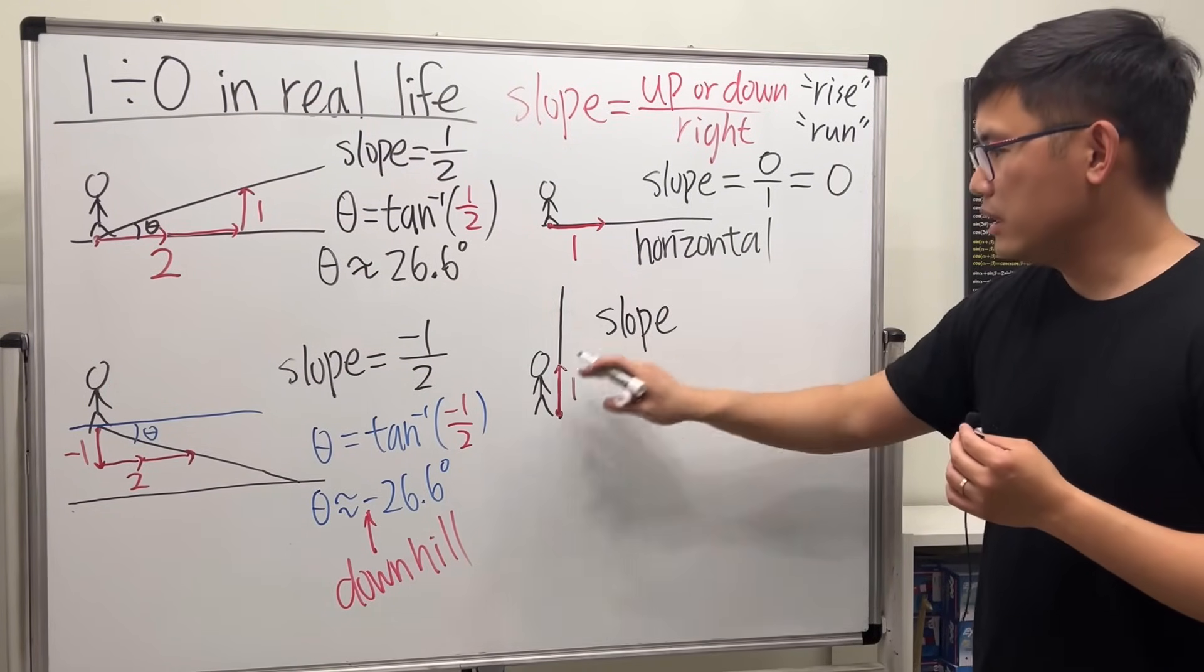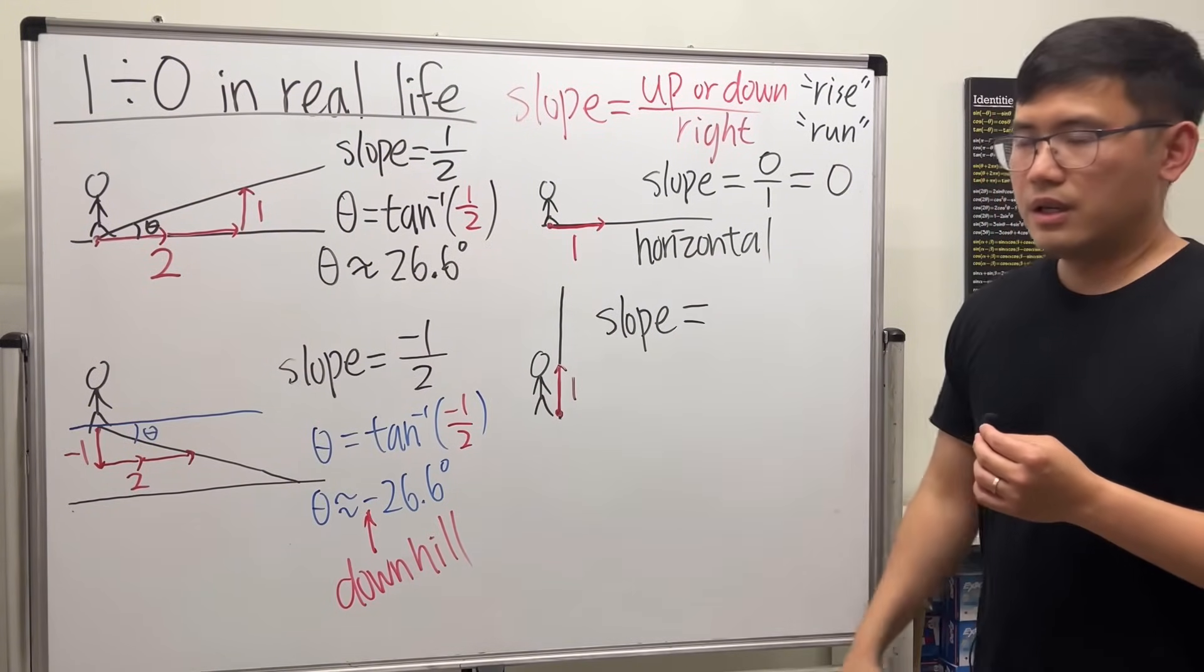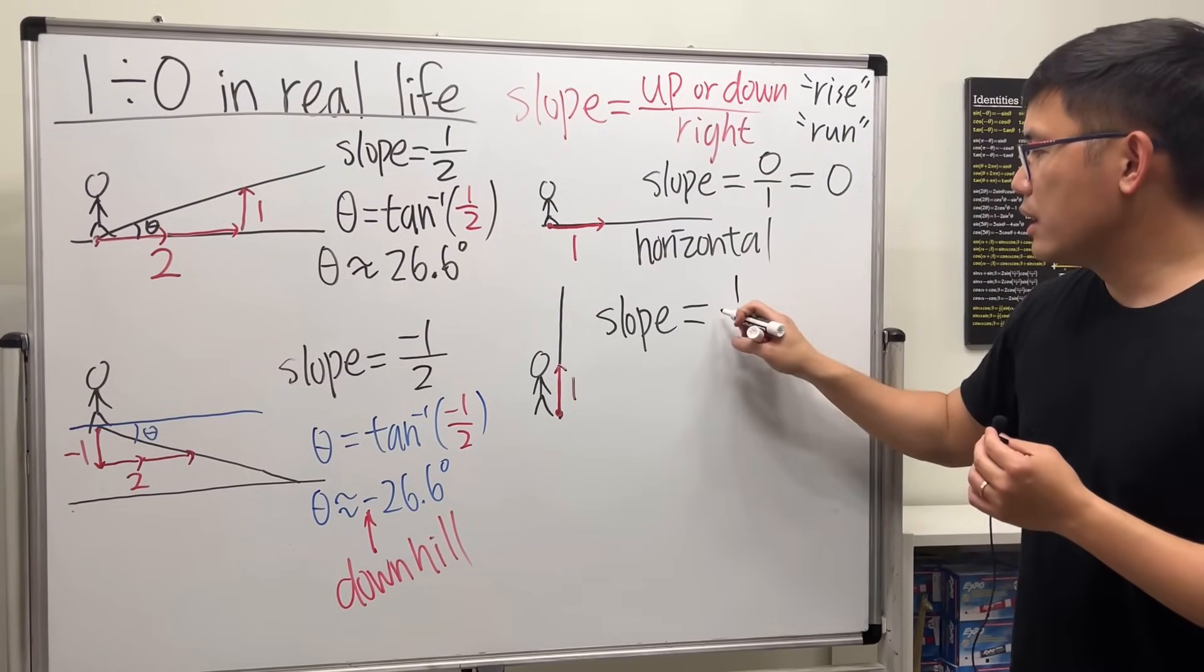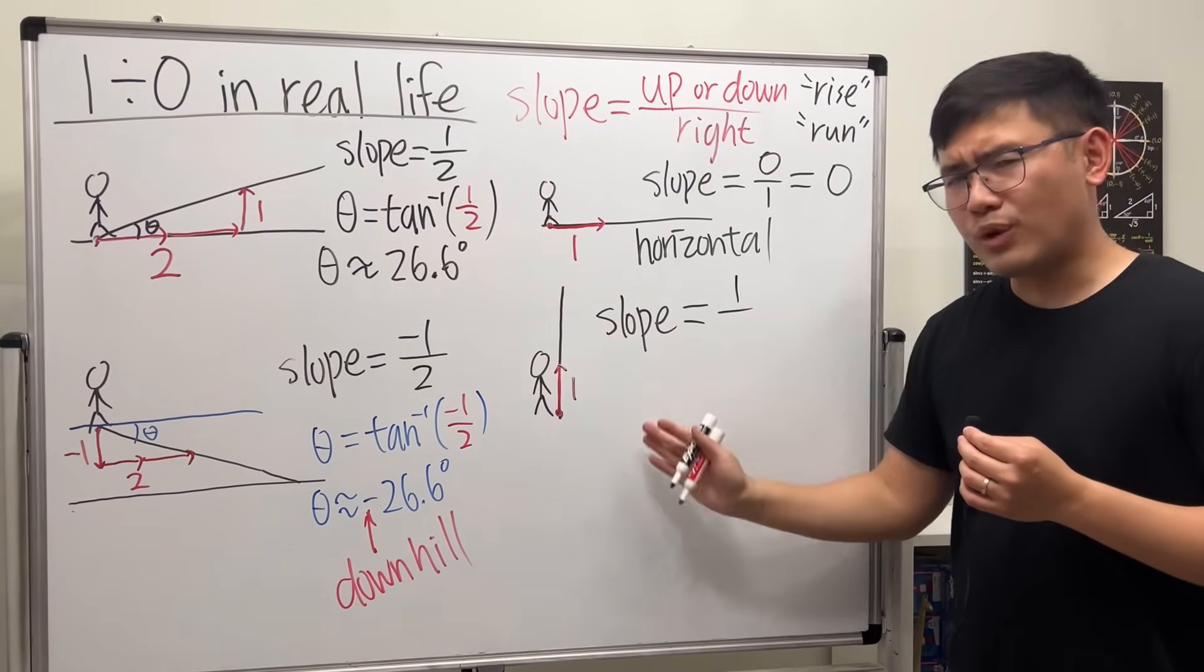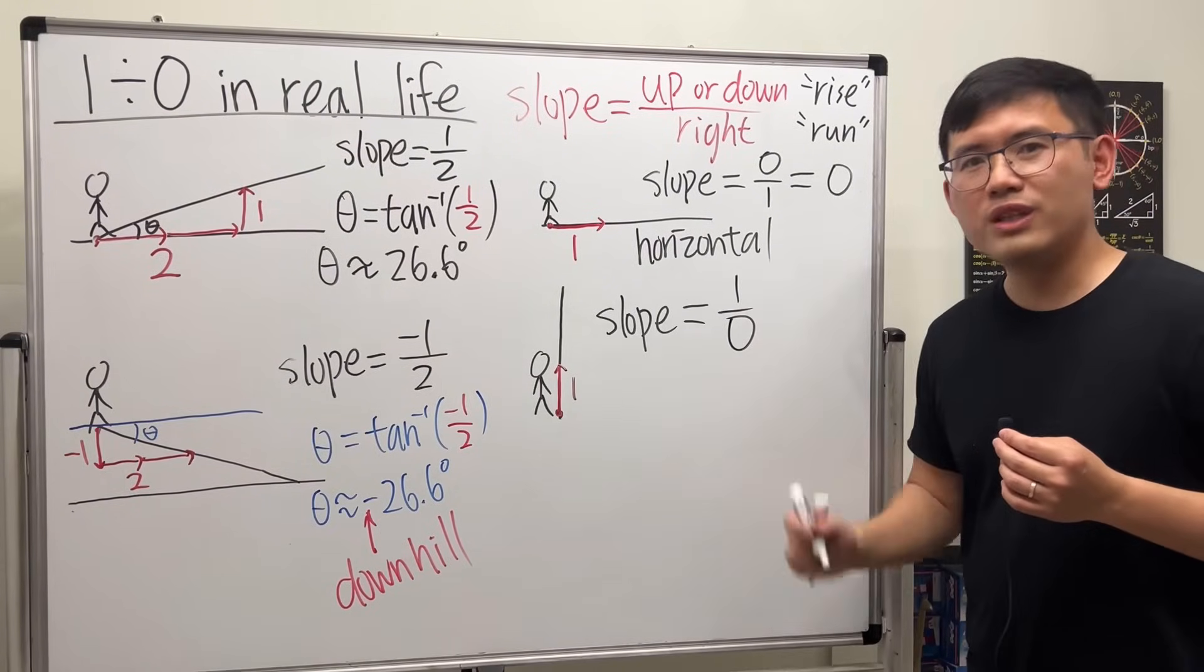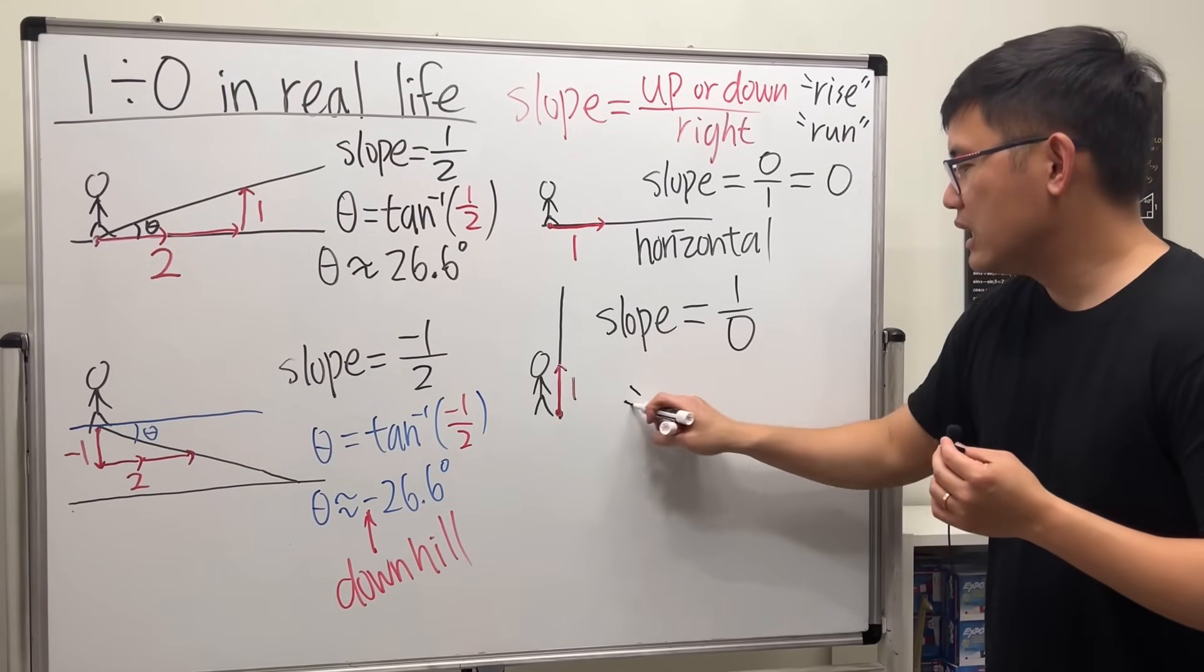The slope in this situation - we go up one time, that's the numerator. But we don't go left or right, so we divide by zero. Now, what's one divided by zero? You know it - it's undefined.